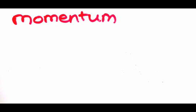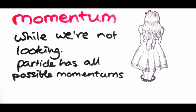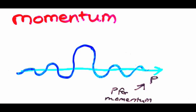Now let's talk about momentum. We know that while we're not looking, a particle must take all possible momentums at once. If we plot all the different momentums a particle has, that also looks like a wave. We'll call this wave the momentum wave function.